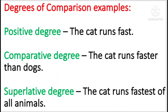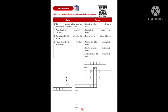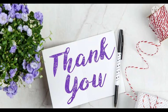This is a small example children. Positive degree: The cat runs fast. Comparative degree: The cat runs faster than dogs. Superlative degree: The cat runs fastest of all animals. Now we are going to do the crossword with superlative adjectives children. Thank you children, have a nice day. Bye bye.